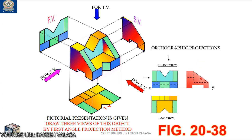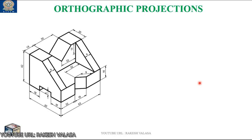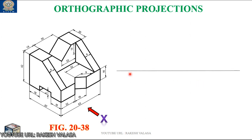This is the side view for the given pictorial view. Let us see how to construct — how to draw this front view, top view, and side view on the drawing sheet. This is the given figure. Here the arrow symbol indicates the front view direction and X is the observer. First, we need to draw two axes: the XY reference line and another one is the X1, Y1 reference line.